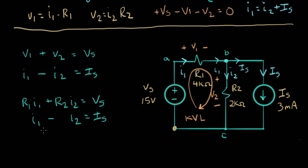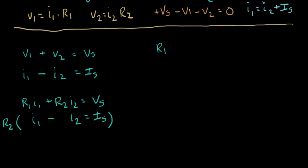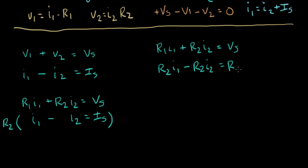The next step is to eliminate one of the currents. I'll eliminate I2 by multiplying the second equation by R2 and adding the equations together. Rewriting: R1·I1 plus R2·I2 equals Vs, and R2·I1 minus R2·I2 equals R2·Is. Adding these equations together, the I2 terms nicely cancel out.